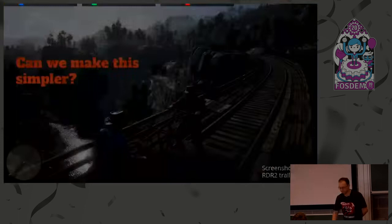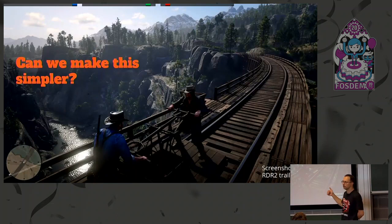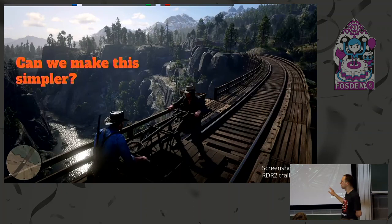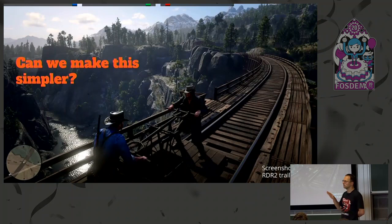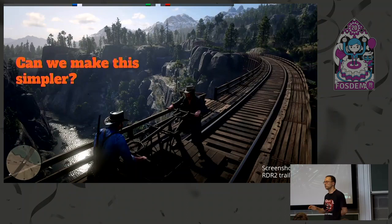This is a screenshot from Red Dead Redemption, and what I want is for us to be able to write graphics code which would produce a similar picture on all platforms, including the web. Today that is not impossible at all. If you use a commercial engine like the one Rockstar uses, you may reach some desktop platforms but not all, and you will not reach the web. So this is a very unreachable goal today, and this is what we are trying to fix in the WebGPU working group.